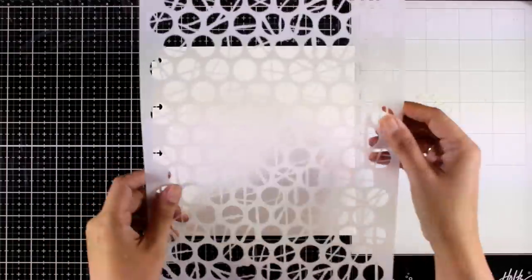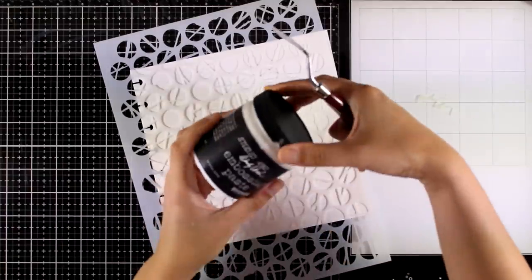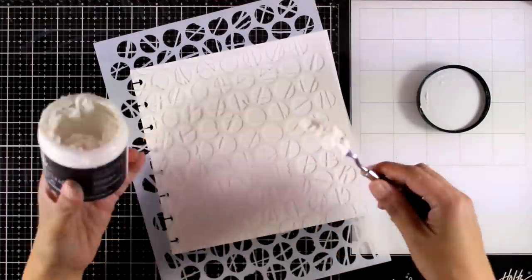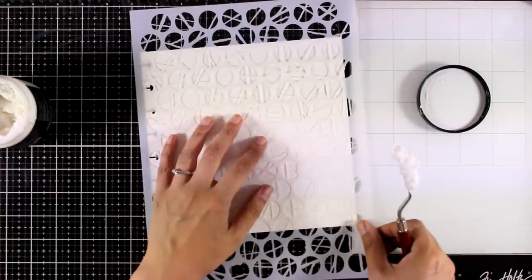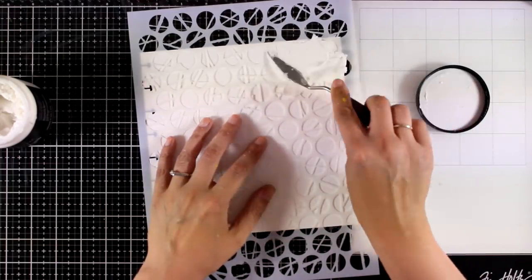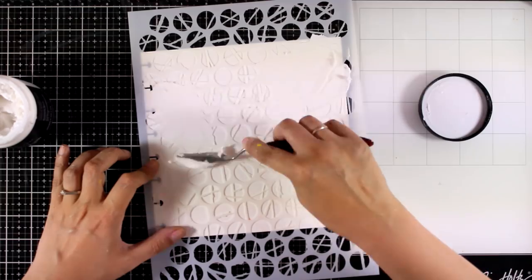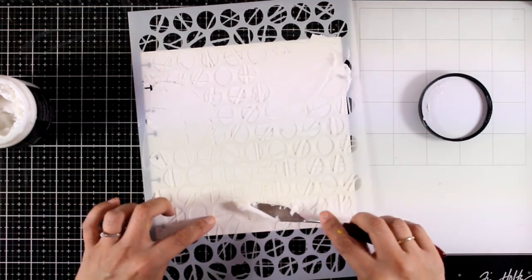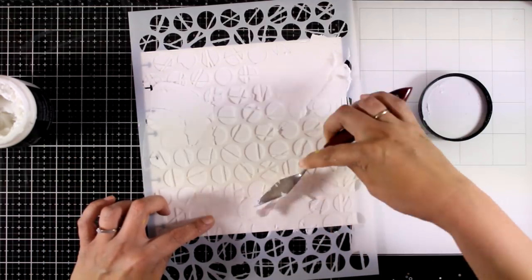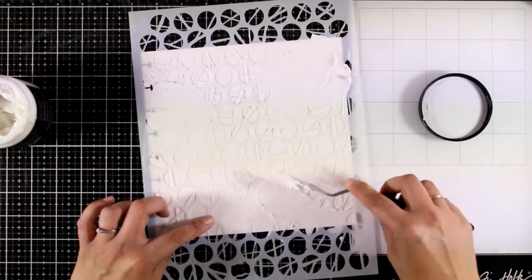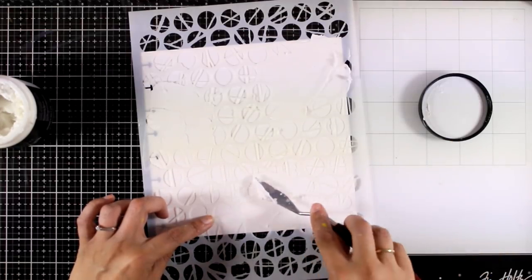So first of all, I'm going to apply some embossing paste with my spatula over this large stencil. This is by Darkroom Door and it gives this lovely texture of dots. I'm applying my paste in different areas, not trying to be perfect here, and I'm not going to cover up the whole surface completely.